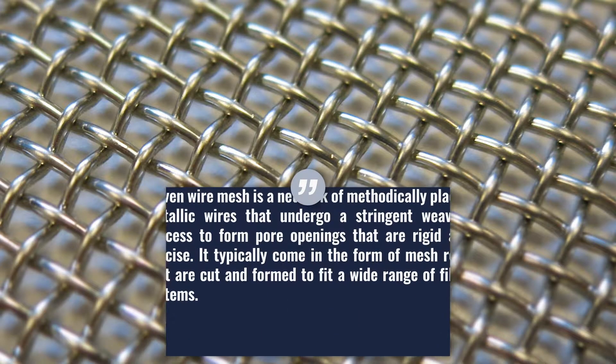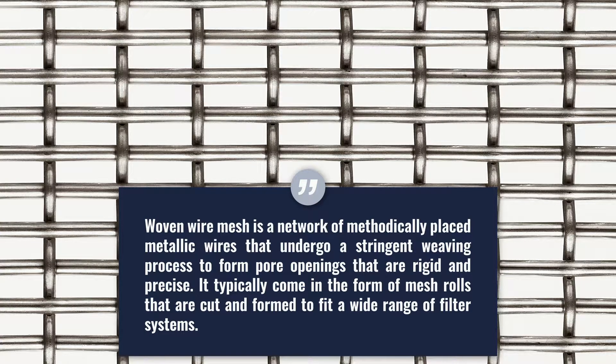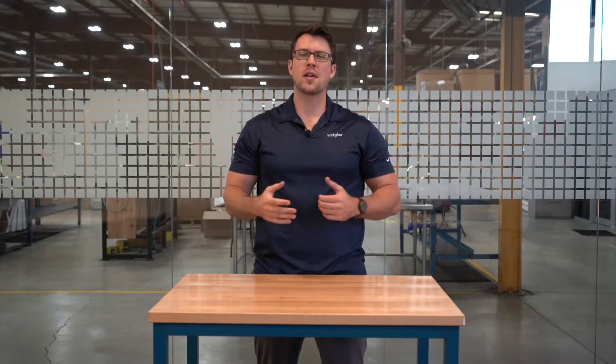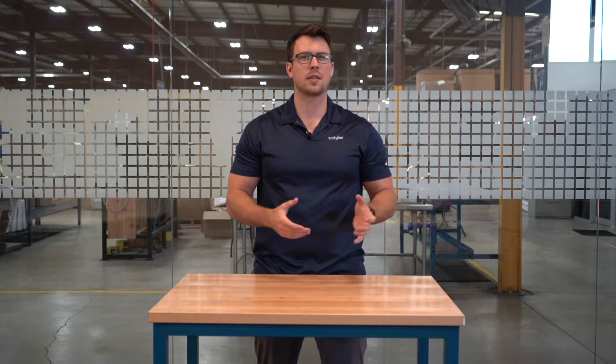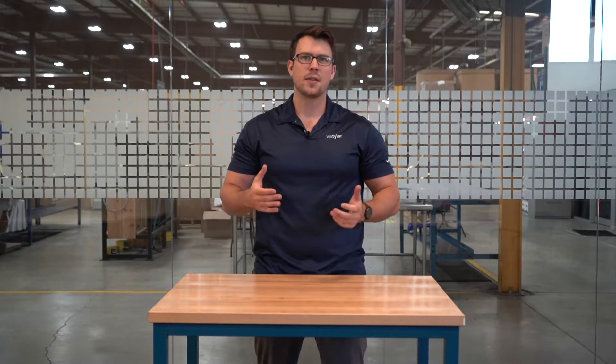Woven wire mesh is a series of metallic wires that undergo a weaving process to form rigid and precise openings. This mesh can then be cut and formed to meet a wide array of filter applications. Prior to being woven, wire diameter, micron rating, weave pattern, length, and width are all calculated. This helps ensure accuracy and repeatability in filter performance.